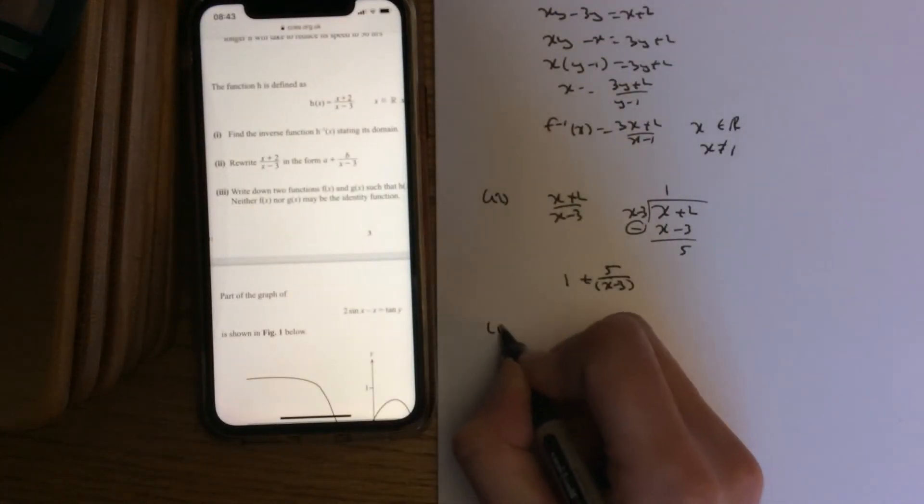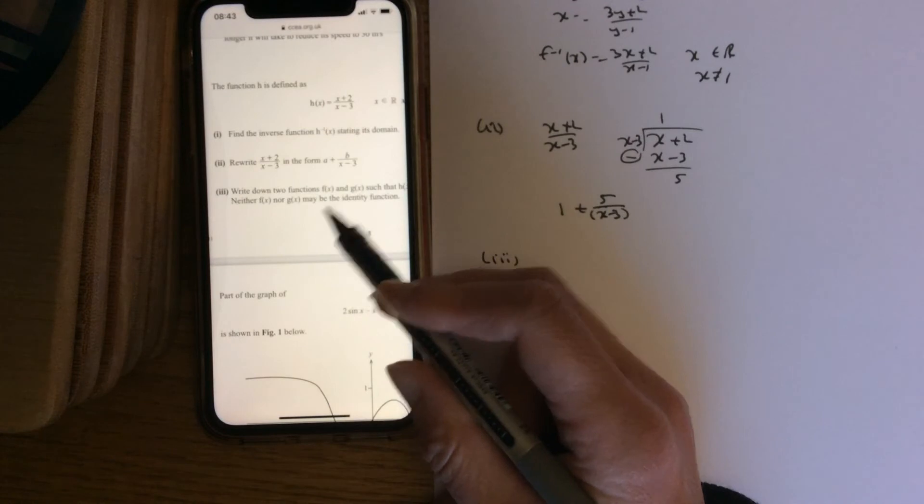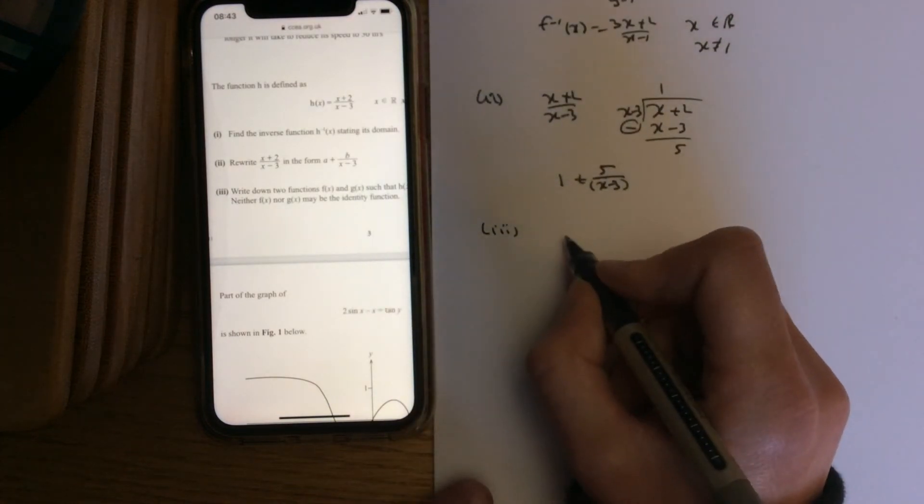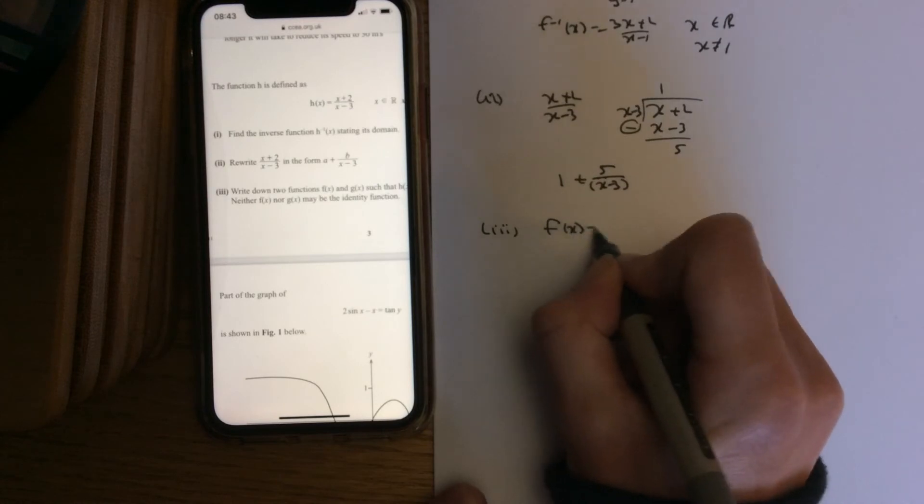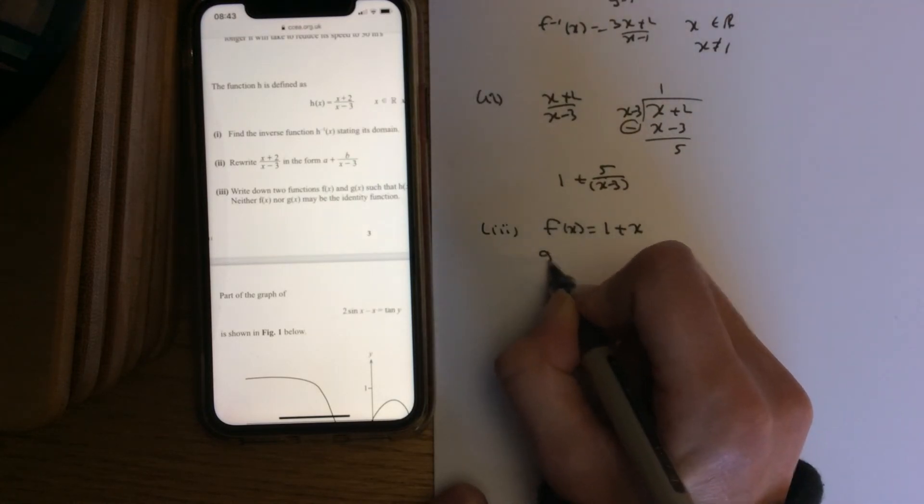And part 3: rewrite this in terms of functions. So I could say in here f(x) could be 1 plus the x value, and then g(x).